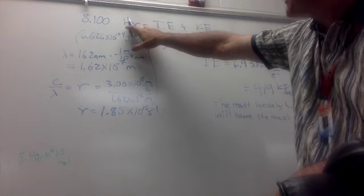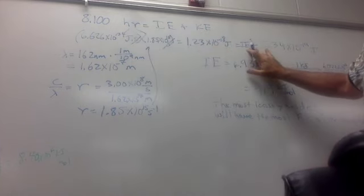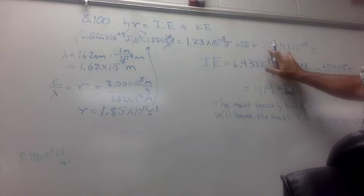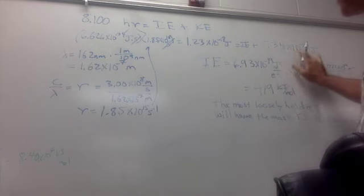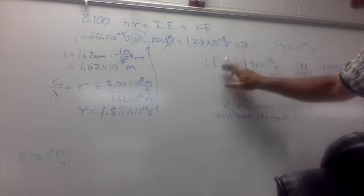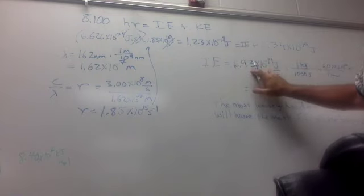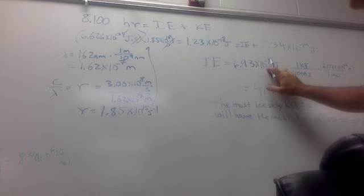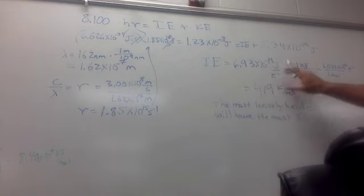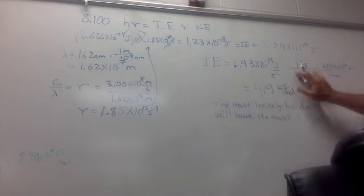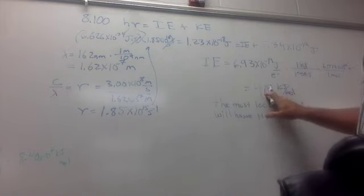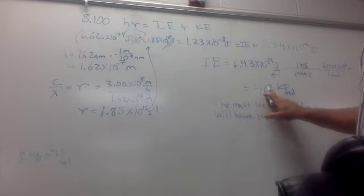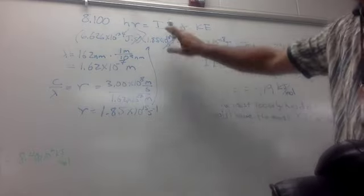Which is equal to the ionization energy plus the number they gave in the problem for the kinetic energy of the electron that's emitted, 5.34 times 10 to the minus 19 joules. Subtracting this from both sides, I get the ionization energy to be equal to 6.93 times 10 to the minus 19 joules. Once again, multiplying by Avogadro's number and dividing by 1,000, I get 419 kilojoules per mole as the energy per mole for this ionization energy.